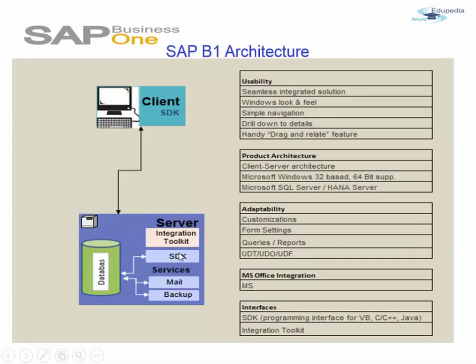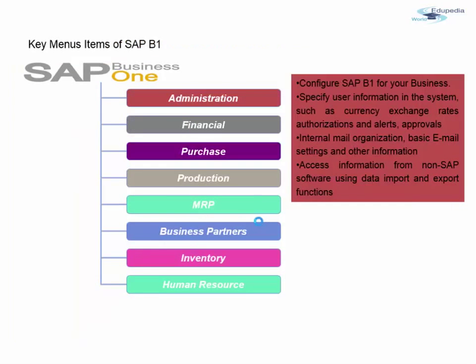SDK stands for Software Development Kit. SDK contains a Data Interface Application Programming Interface, known as DI API, and a User Interface Application Programming Interface, known as UI API. These two interfaces comprise the SDK and are useful for companies that build add-ons for SAP Business One.